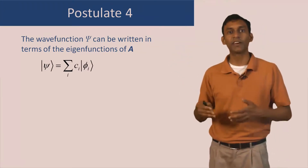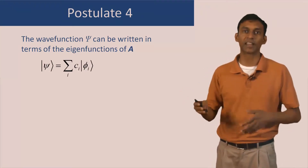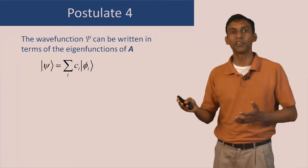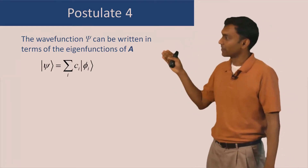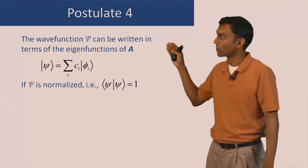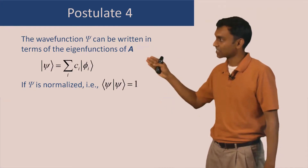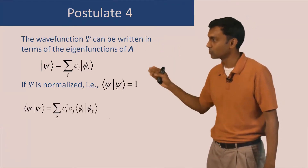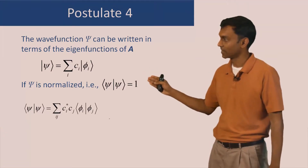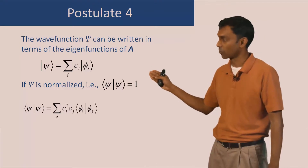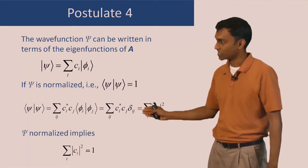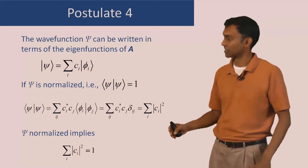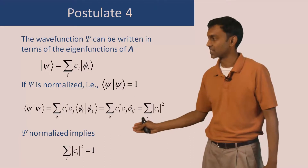This is similar to the way we write a general vector as a linear combination of basis vectors like i, j, and k, or similar to a Taylor expansion where we write a general function as a linear combination of polynomials. Now if the wave function is normalized, this imposes a condition on the coefficients C_i. The normalization condition psi|psi equals 1, when substituted with the expansion of psi in terms of the basis functions and using the orthonormality of the eigenfunctions, gives the condition that the sum of the squares of the coefficients C_i equals 1.